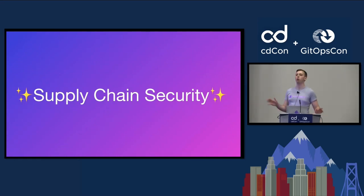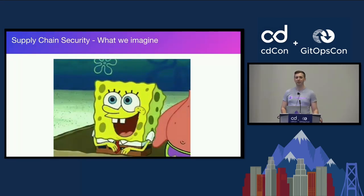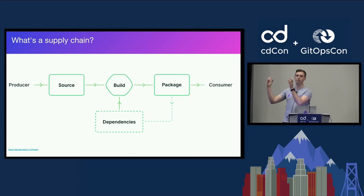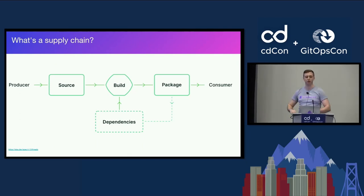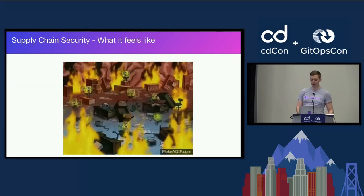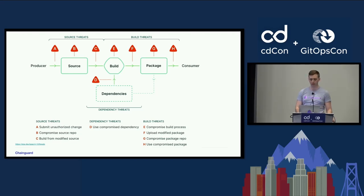This talk is going to be all about supply chain security. It's a big hot topic at the moment, but what does that mean? We like to think it's all sunshine and rainbows — a nice pipeline where we start from source, go to build, package it up, and send it to our production servers. In reality it's a bit of a mess. For this talk, we're really going to be focusing on the source component on the left.